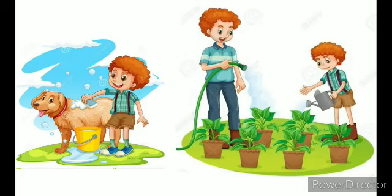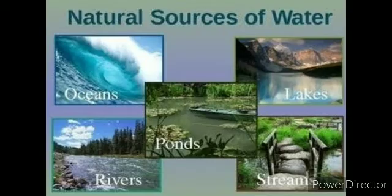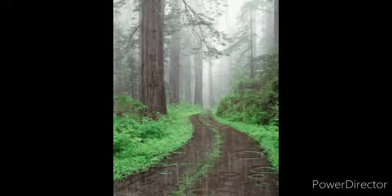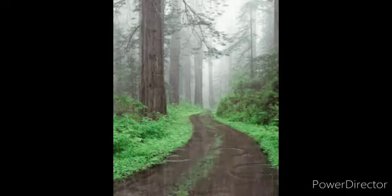But not only humans, even animals and also plants require water. Now children, what are the different sources of water? Yes, oceans, ponds, rivers, lakes and streams. But now the question is, where do they get the water from? Well, it's from the rain.